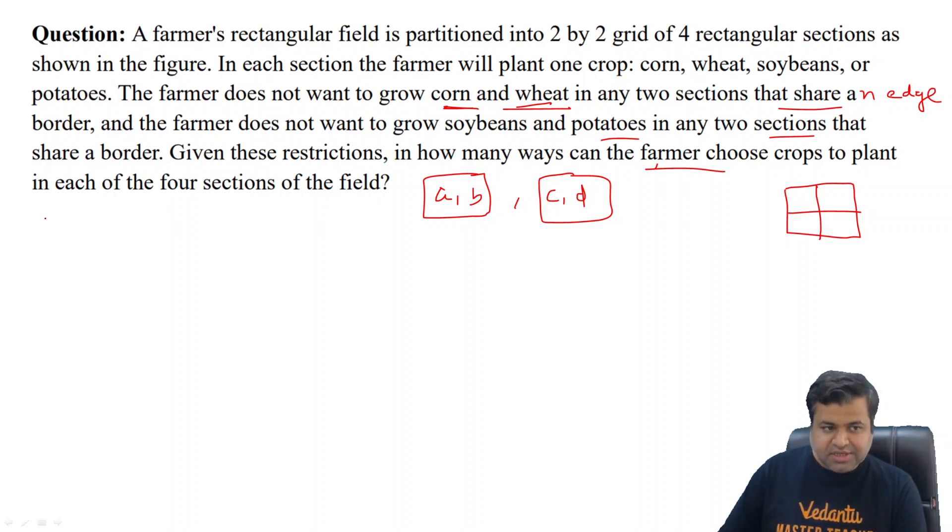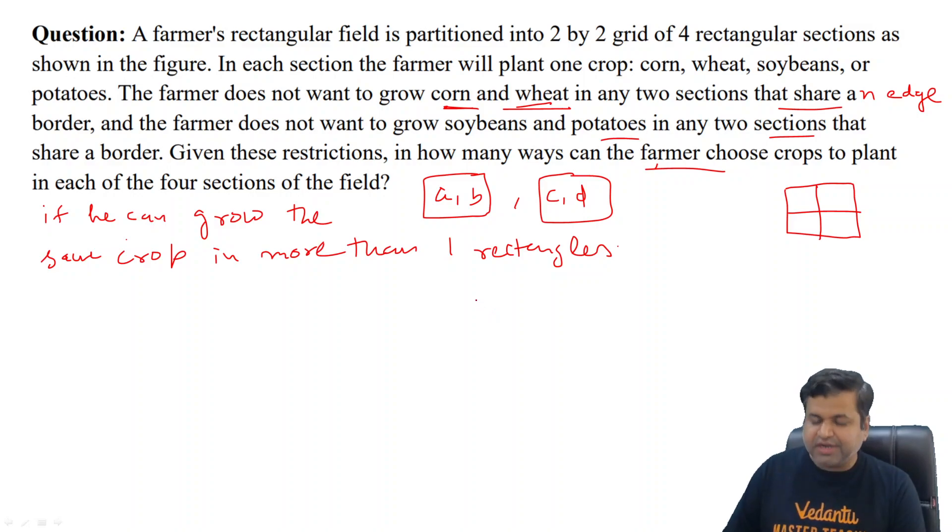It was also mentioned that we can grow the same crop in more than one rectangle. So it is not necessary that we need to grow all four crops. Let's name the crops as A, B, C, and D. We cannot grow A and B on those rectangles that share an edge, and similarly we cannot grow C and D on those squares that share an edge.